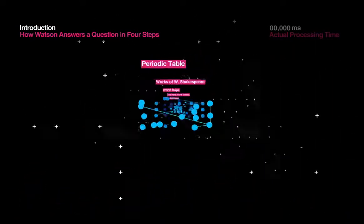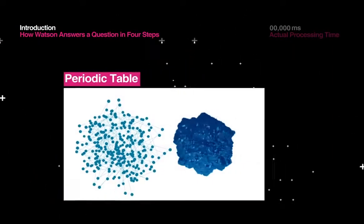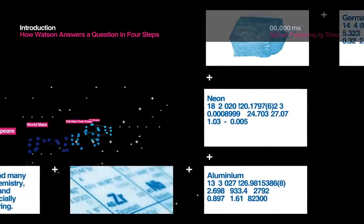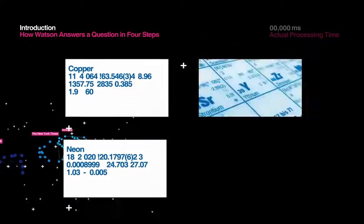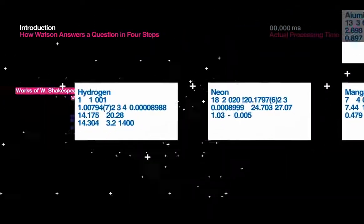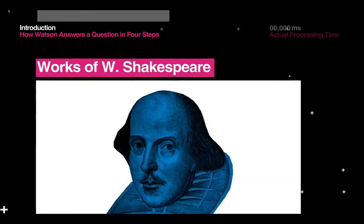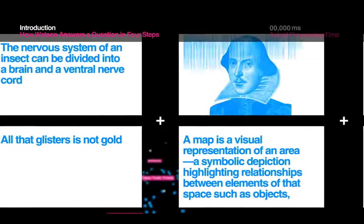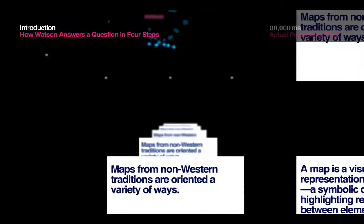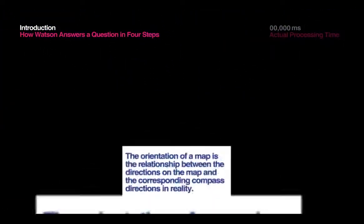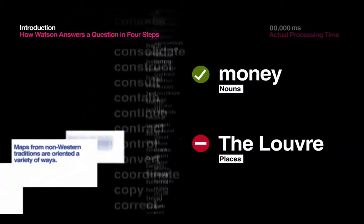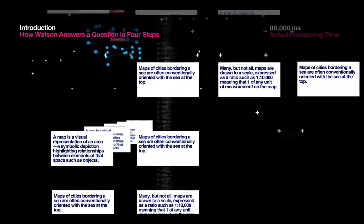How does a computing system reach a single answer to clues posed in human language? Unlike traditional databases designed for computers, real language is implicit, ambiguous and full of complexity. That's one of the reasons why, until now, computer searches have only spit out documents filled with keywords. It's been up to us to find the answers in those documents.